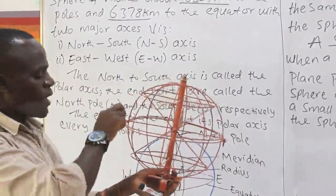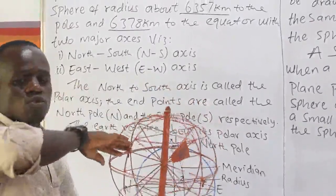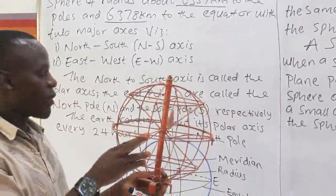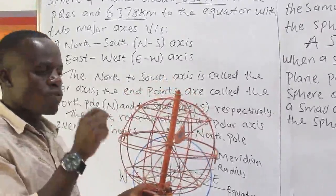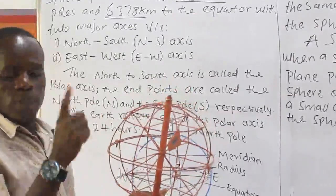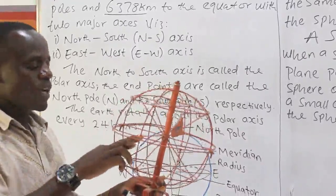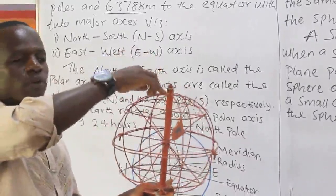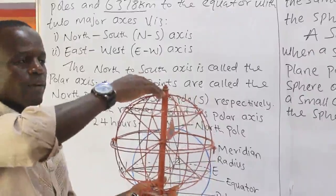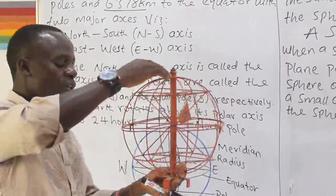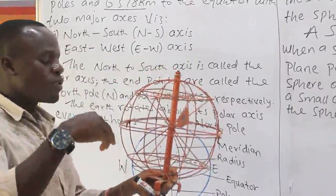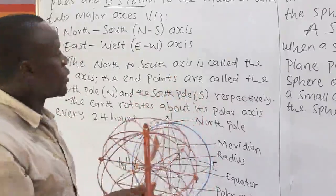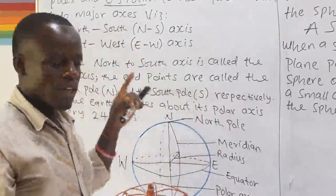The equator divides the earth into two equal halves. The radius from the center to the equator is the radius at the equator. It is supposed to be that the radius from the center to the equator and the radius from the center to the pole are the same, and if that were the case we would say it's completely spherical. But scientific investigation and calculations have shown that these two radii are not actually the same, so we say it's usually considered as a sphere.